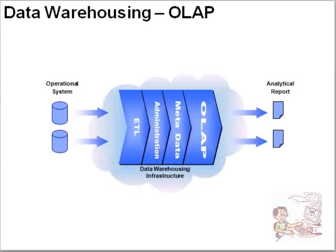Once you have data in your data warehouse, you have another layer called OLAP, similar to your ODS layer. This sits on a different tool — you have Hyperion, Cognos, and to a certain extent Business Objects, which perform this OLAP nature of reporting. It stores data as cubes, which refer to dimensions and facts. Based on that cube, you can slice and dice your data — that functionality comes with the OLAP tool.